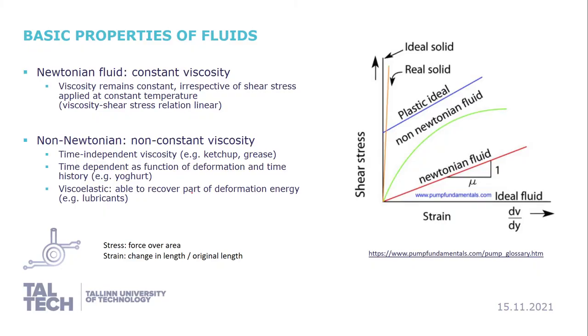About Newtonian and non-Newtonian fluids, you might have heard these terms already. Newtonian fluids are the ones that have constant viscosity, irrespective of the shear stress we apply. Stress means force applied over area. Strain means a changing length compared to the original length, as you pull the material apart. Newtonian fluids have a constant viscosity, irrespective of the shear stress applied at constant temperature. That means the shear stress relation is linear.